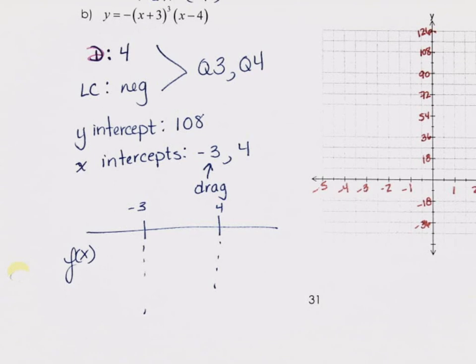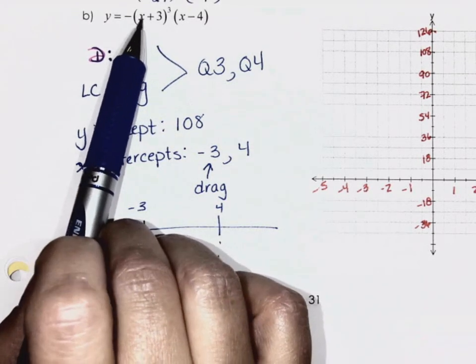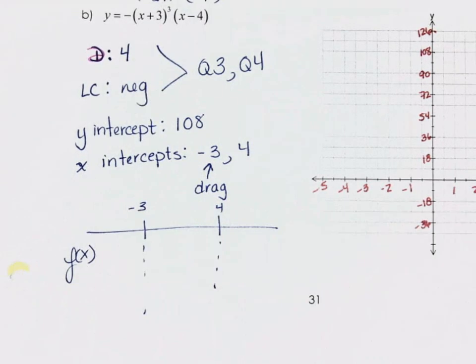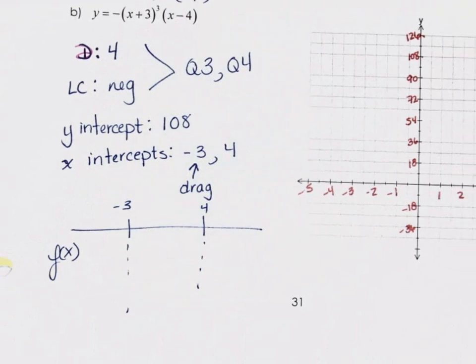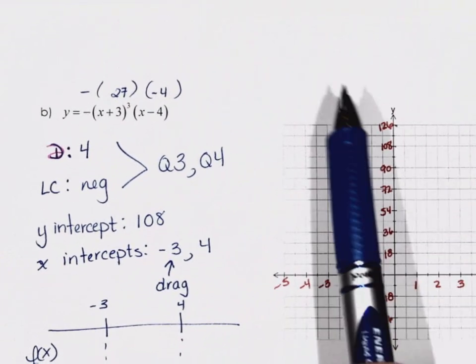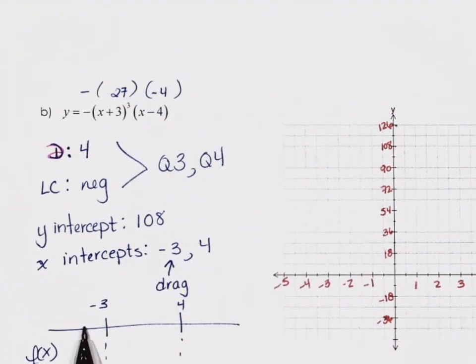If I put negative 4 into (x + 3)³, I get a negative answer. A negative cubed is still negative. If I put negative 4 into (x − 4), I get a negative. We also have that negative out front. Negative times negative is positive — so y-values are positive for x less than negative 3. That matches — I should be in quadrant 2.